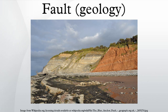Dip-slip faults can occur either as reverse or normal faults. A normal fault occurs when the crust is extended — alternatively called an extensional fault — and the hanging wall moves downward relative to the footwall. A down-thrown block between two normal faults dipping towards each other is called a graben. An up-thrown block between two normal faults dipping away from each other is called a horst.